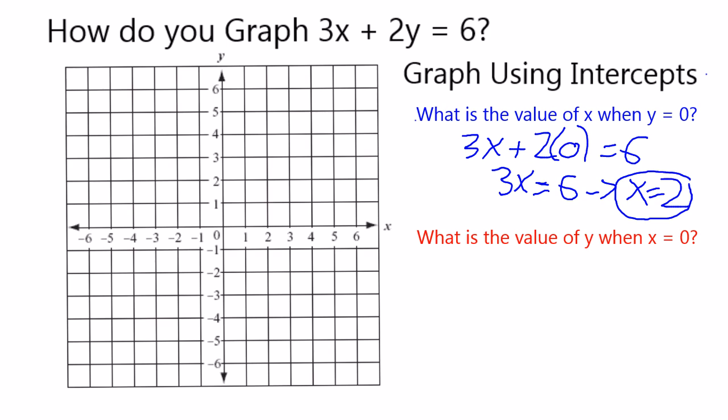So now we know for this linear equation, when y is equal to 0, x is equal to 2. It goes through the point (2, 0), so we can mark that on our graph.